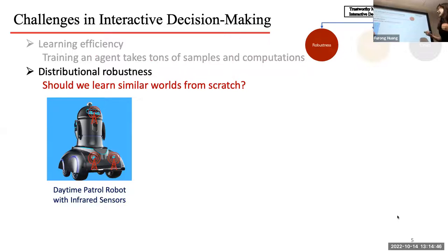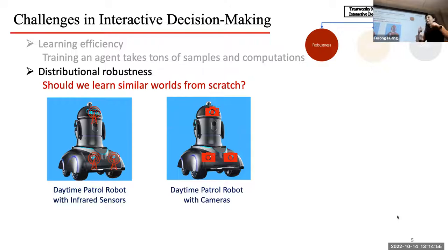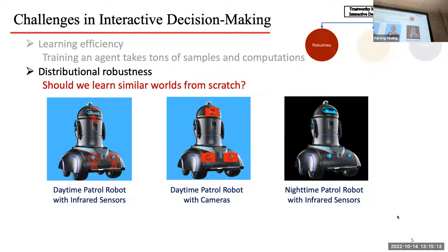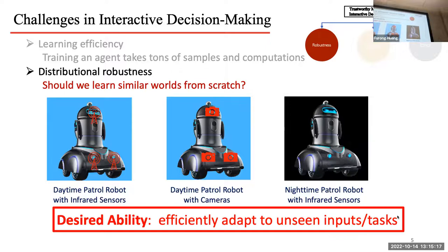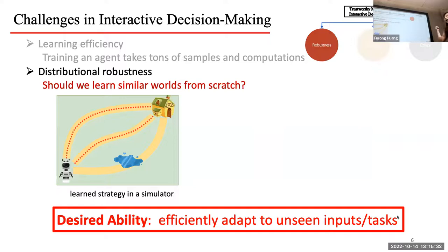Consider this example: you've trained a patrol robot with infrared sensors on a battlefield during the daytime and it works very well. But what if you have a sensor upgrade — rather than infrared sensors, you now have camera sensors, still in the same field during daytime — do you want to train everything from scratch? What about during the nighttime? With the desired ability to efficiently adapt to unseen inputs, can we speed up learning and finally realize true artificial intelligence?